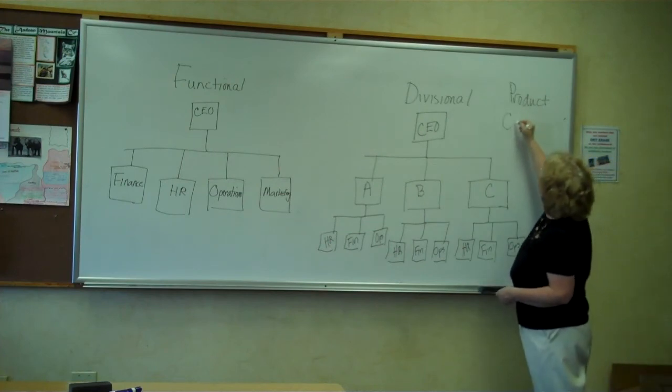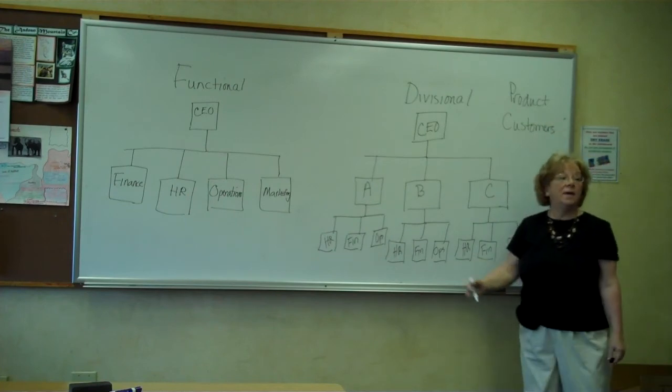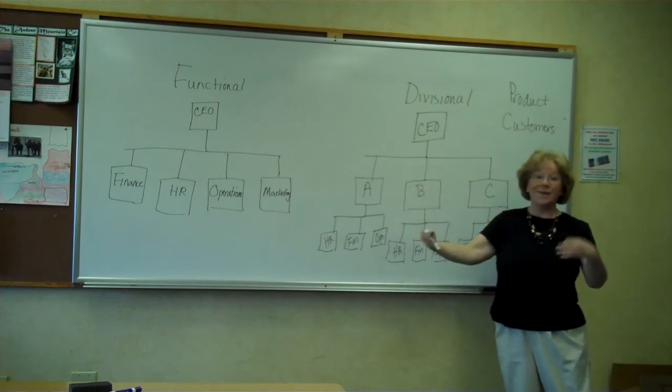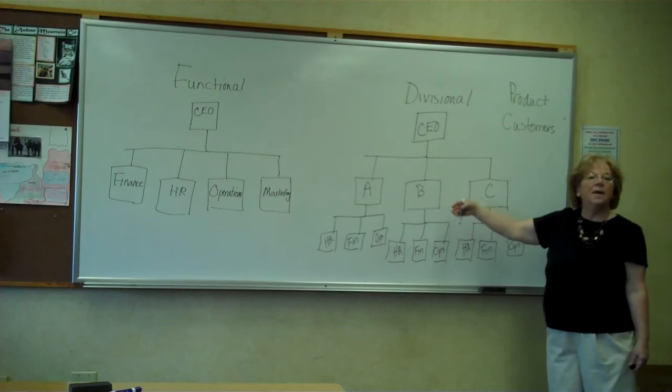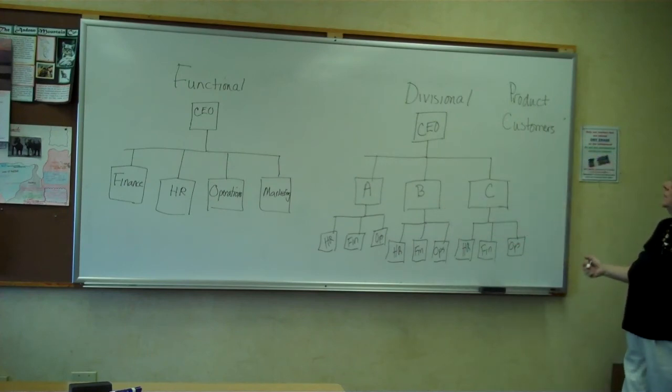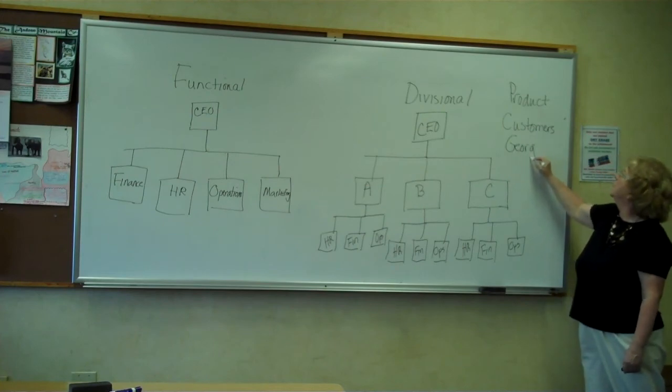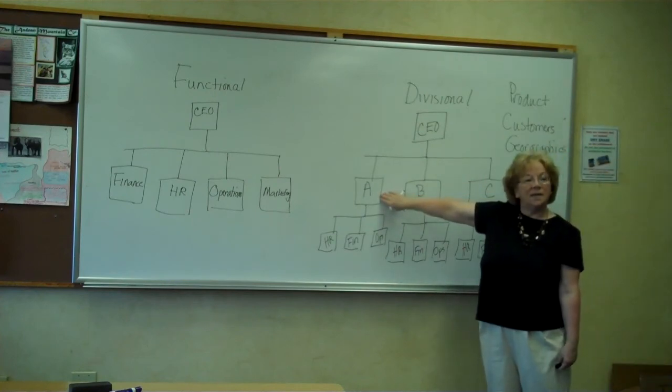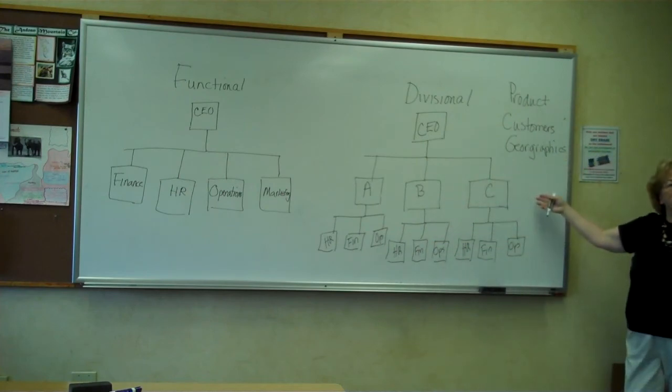Some are around customers. So again, the divisions might be retail, you and I, consumers, wholesale, selling to other businesses, and perhaps the government as a third customer. Another way they can be grouped is around geographics. So you might have domestic customers, European customers, Asian customers.